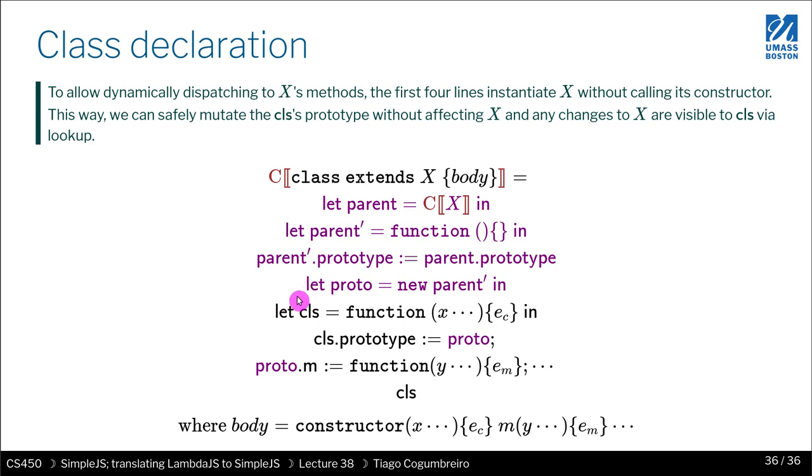So next what you do, you create, you instantiate the prototype. That prototype object, the object with just the __proto__ thing, is available in proto. Next you have another let. What is that let? You are creating just a function, a JavaScript function.